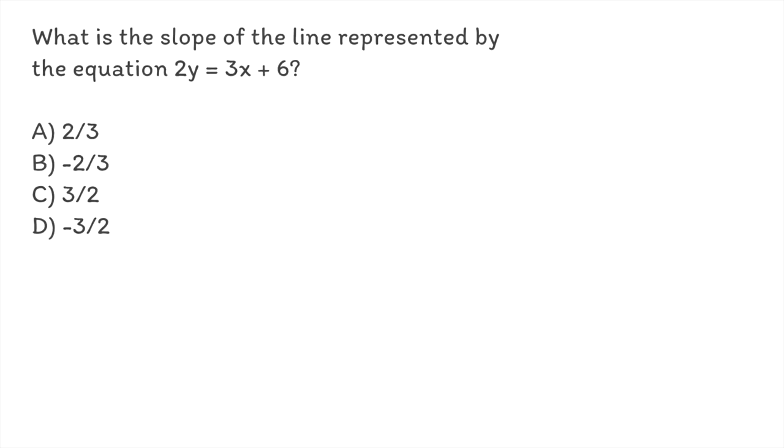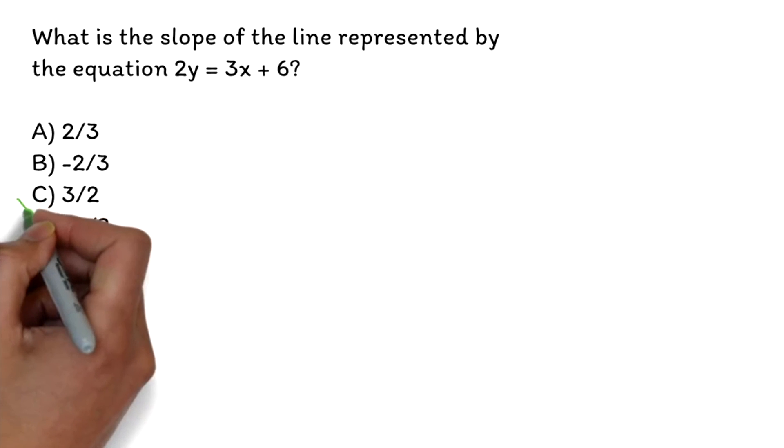Let's look at a similar question to this. What is the slope of the line represented by the equation 2y = 3x + 6? A) 2/3, B) -2/3, C) 3/2, D) -3/2. The correct answer is C, 3/2.